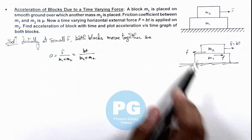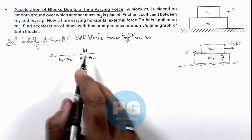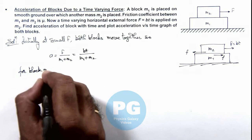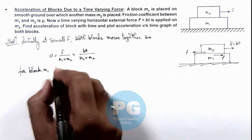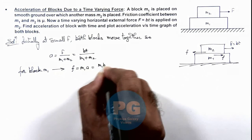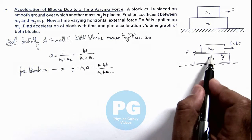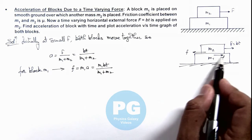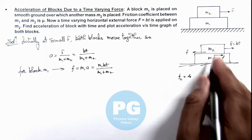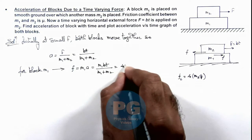The acceleration of both blocks is equal and linearly increasing with time according to this relation. For block m1, we can write its equation of motion as friction force f = m1 × a, which equals m1 × bt / (m1 + m2). The sliding between the two blocks will start when the friction approaches its limiting value. The limiting value of friction is mu × N, and here the normal reaction is m2 × g, so limiting friction is mu × m2 × g.